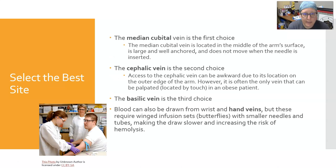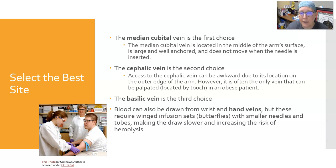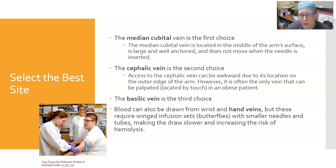When selecting the best site: the median cubital vein is the first choice — it is located in the middle of the arm's surface, is large and well anchored, and does not move when the needle is inserted. The cephalic vein is the second choice, located on the outer edge of the bend of the arm; access can be awkward, but it is often the only vein palpable in an obese patient. The basilic vein is the third choice, on the inner side of the arm. Blood can also be drawn from wrist and hand veins, but a butterfly needle or winged infusion set with a smaller needle is required.